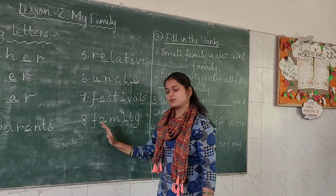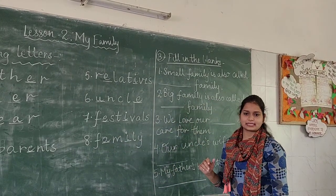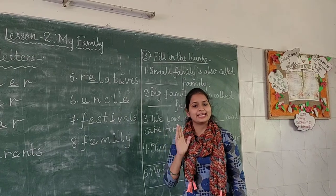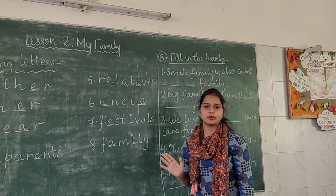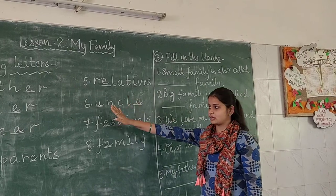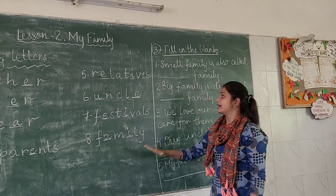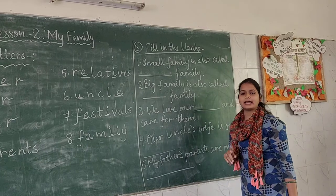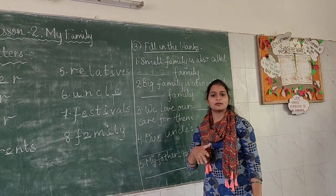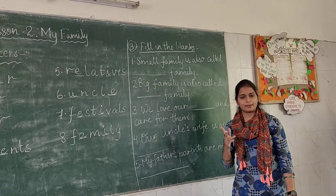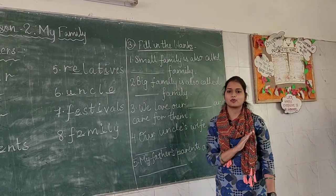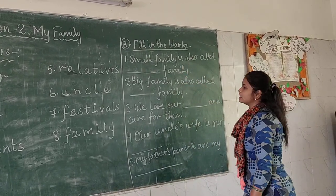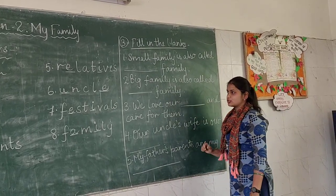Now coming to the second exercise, that is Part B. Make sure that you start the second exercise from a new page — each and every exercise will start from a new page. So Part A, missing letters, is on one page, and Part B, fill in the blanks, will be on the next new page. Also remember that in EPS you will not write anything on the blank page. There are two pages in your copy — one is a blank page and the other is a ruled page — so you will write on the ruled page only.